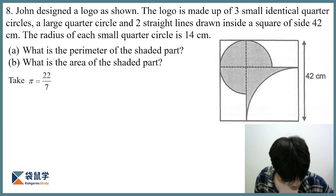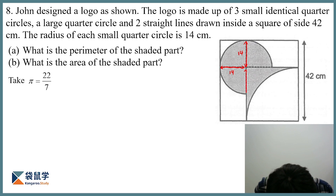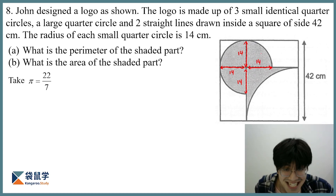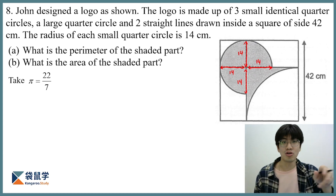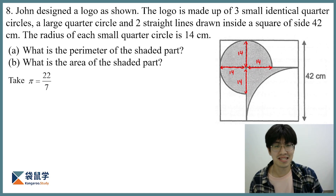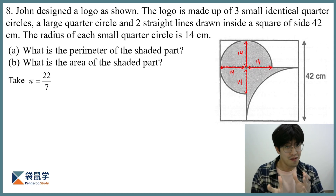Let's do that. We know this is 14, this is also 14, this is also 14, and one more — this is also 14, because these are all the radius of the small quarter circle. Now let us have a look at the first part: what is the perimeter of the shaded part?